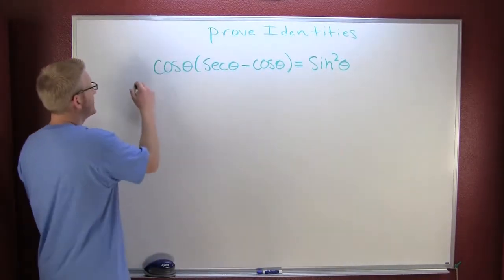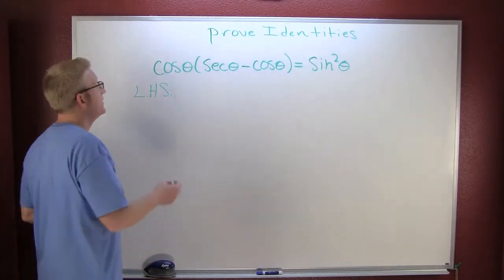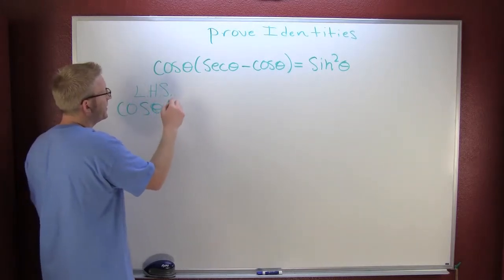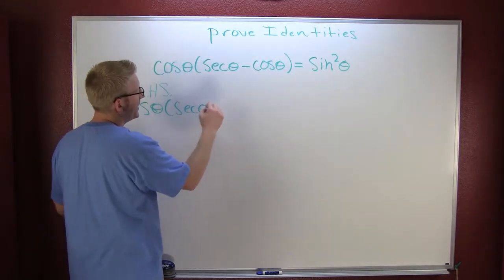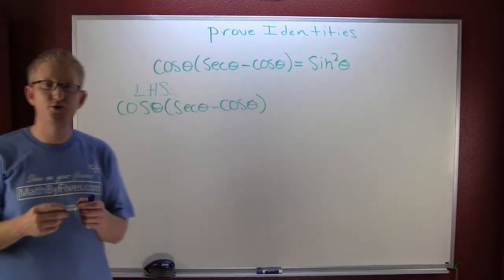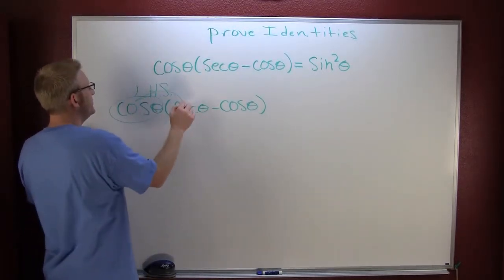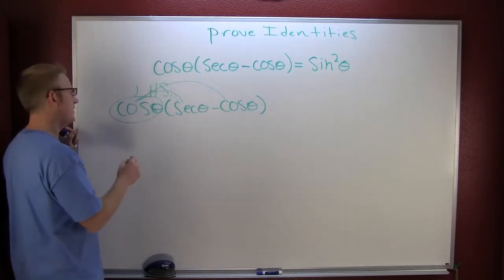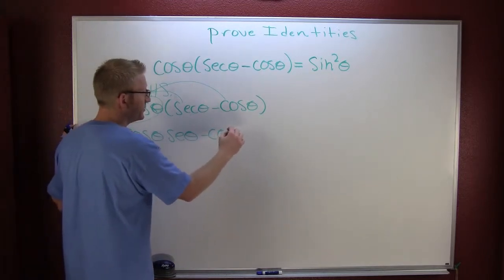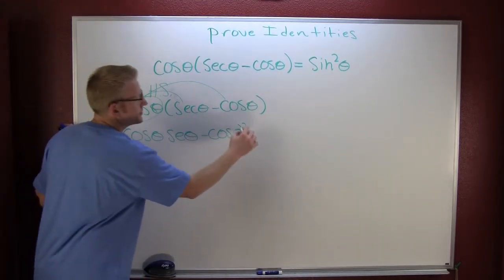I'm gonna write it down. That's the left-hand side: the cosine of theta times the secant theta minus the cosine of theta. And then these things distribute algebraically, just like you're used to from back in the day. This is the cosine theta times secant theta minus the cosine squared — because it's cosine times cosine — cosine squared.